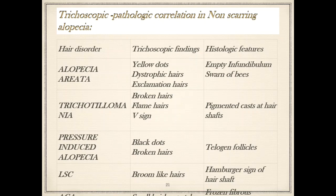In trichoscopic-pathology correlation for non-scarring alopecia: in alopecia areata, trichoscopy shows yellow dots, dystrophic hairs, and exclamation hairs; histologically there are empty infundibula and swarm-of-bees appearance due to lymphocytic infiltration. In trichotillomania, trichoscopy shows broken hairs, flame hairs, and V-sign; histology shows pigmented casts in the hair shafts. In pressure-induced alopecia, trichoscopy shows black dots and broken hairs; histology shows telogen follicles. In lichen simplex chronicus, trichoscopy shows broom-like hairs and histology shows the hamburger sign.